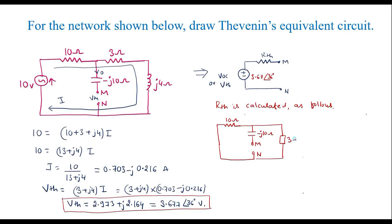Now I will draw this circuit in another way so that it looks easy. Here 10 and 3 plus J4 are in parallel, which is in series with minus J10. I will show it in another way as this is 10 ohm in parallel to 3 plus J4.